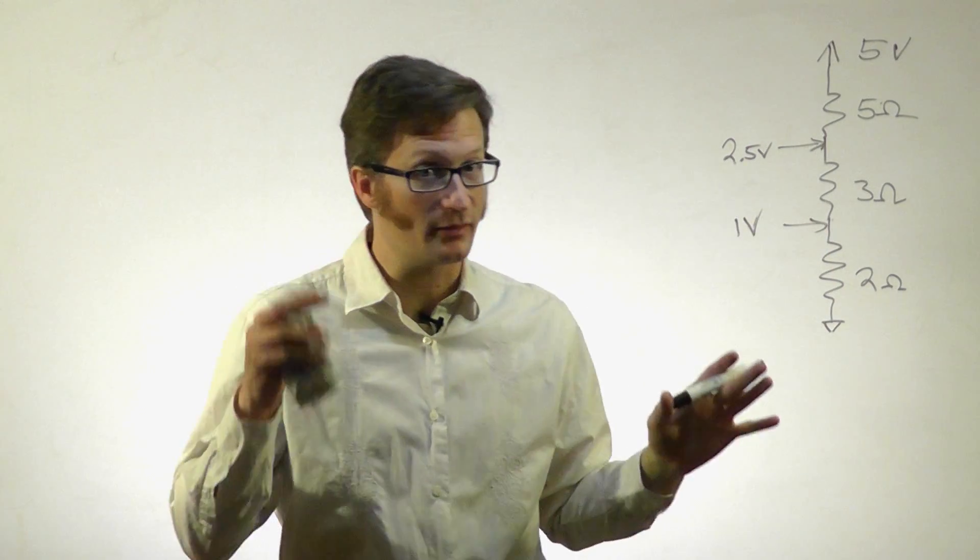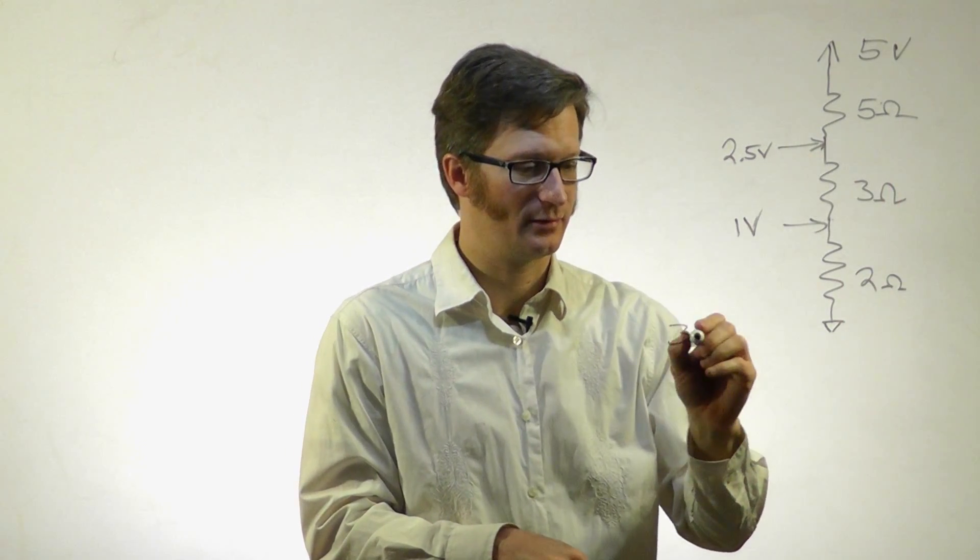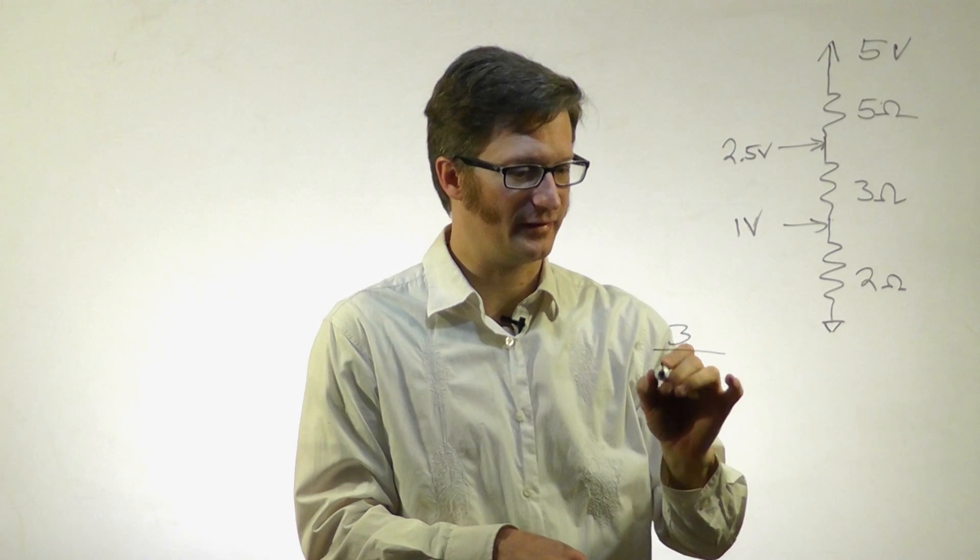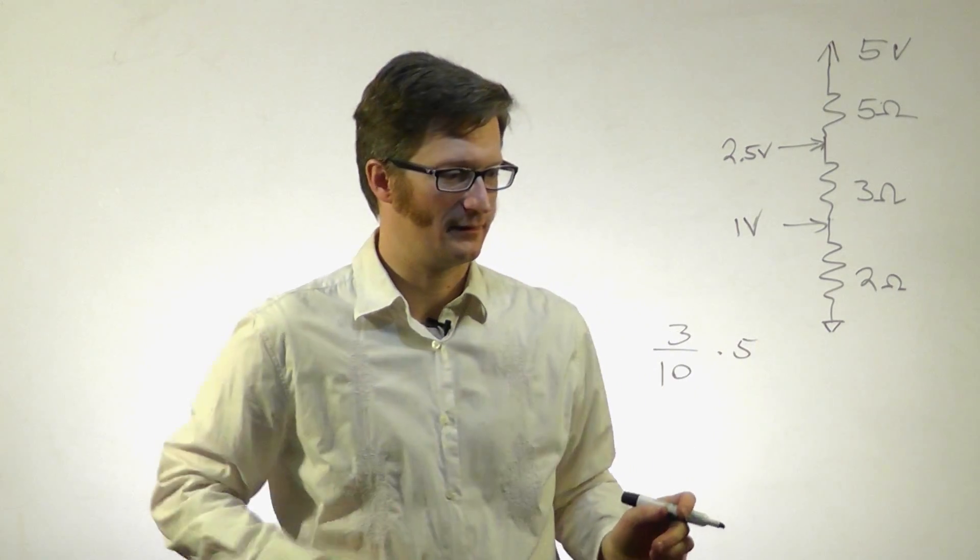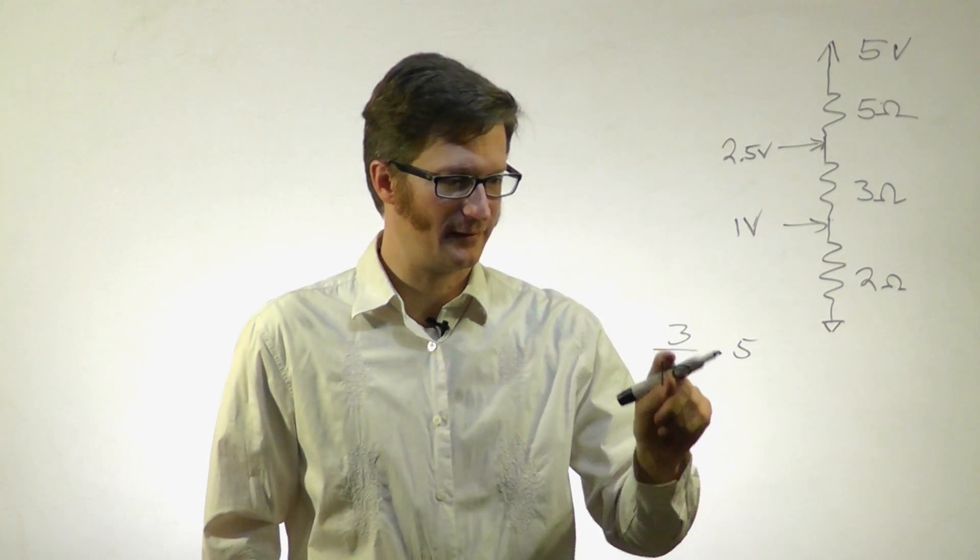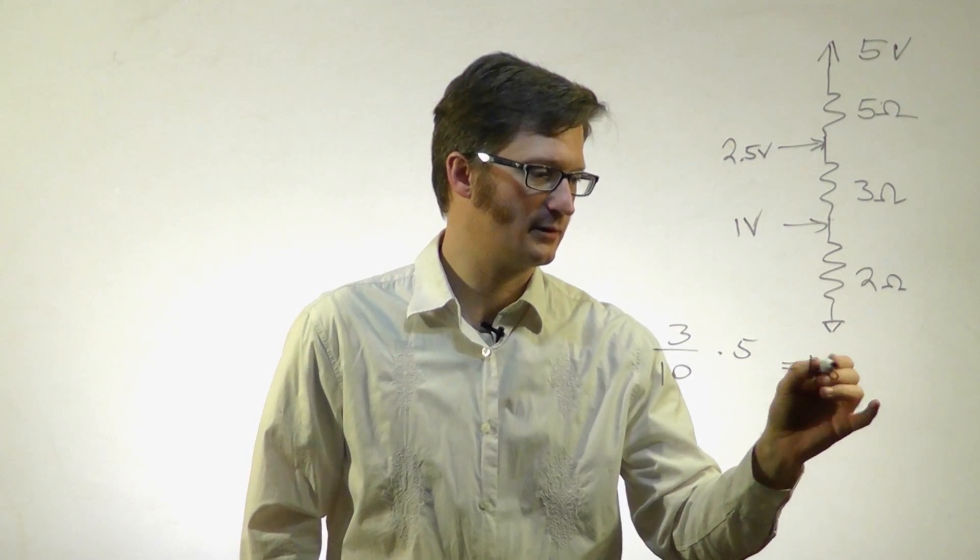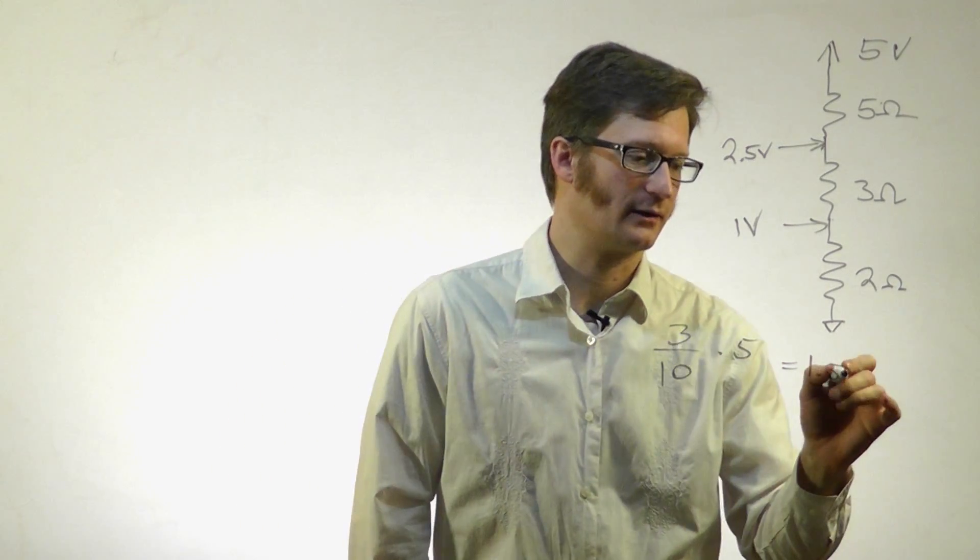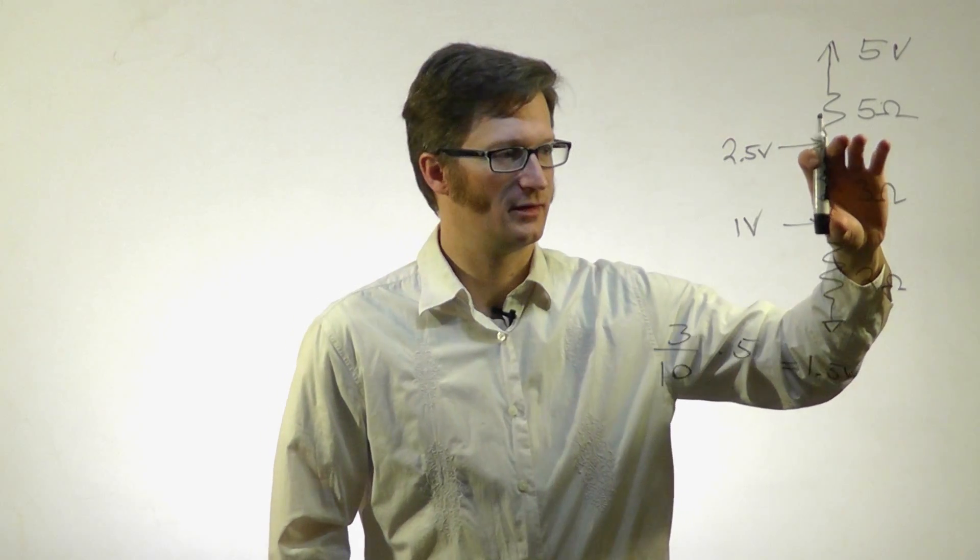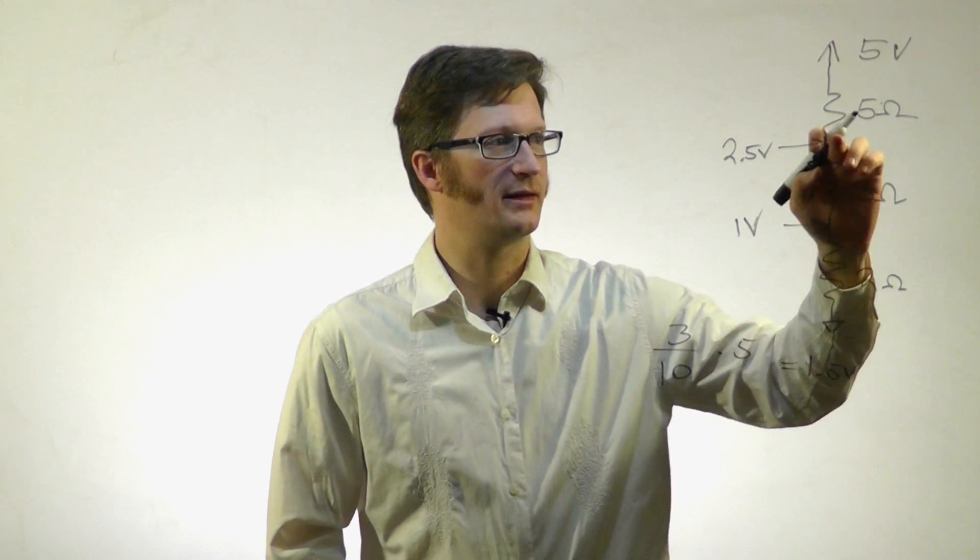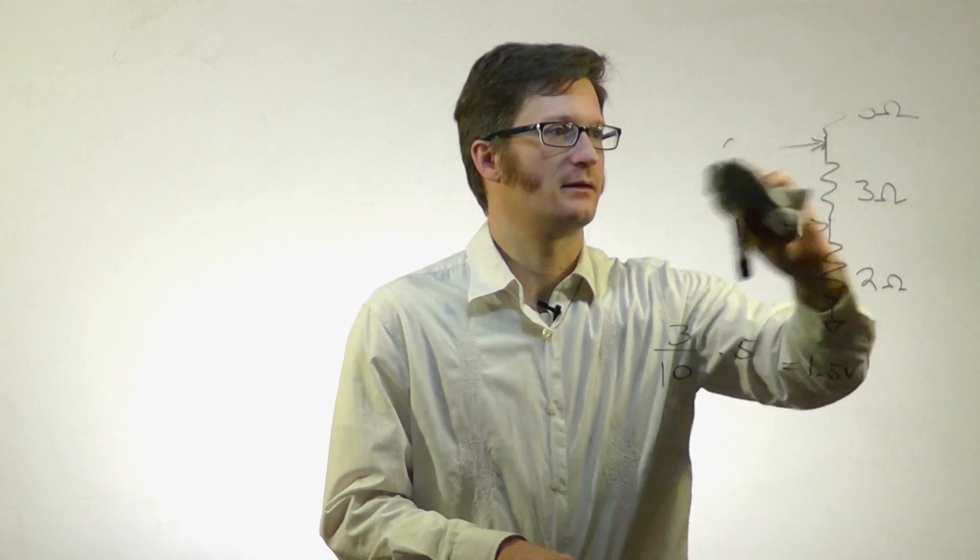Let's say you got your formula wrong. Maybe you just said 3 ohms over the total resistance, so that's 10, times 5. If we multiply that out, that's 15/10 equals 1.5. What we've got here is the voltage dropped by just this resistor. Between this point and this point, I have 1.5 volts.